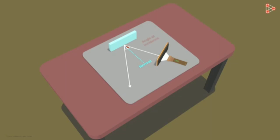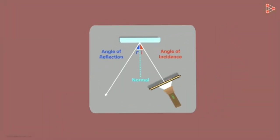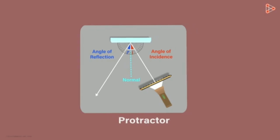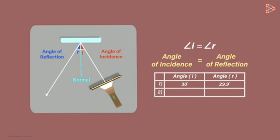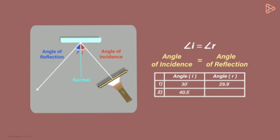Now we want to measure the angle of incidence and angle of reflection. The angle between the incident ray and the normal is the angle of incidence, and the angle between the normal and the reflected ray is the angle of reflection. If we set a 30-degree angle of incidence, we get an angle of reflection of approximately 30 degrees. When we change the angle of incidence, the angle of reflection changes accordingly.